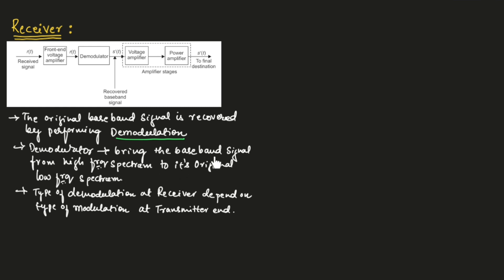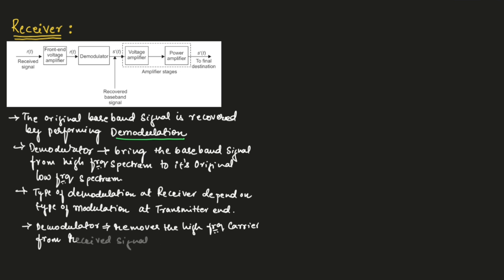At the transmitter end, the baseband signal is converted from the low frequency spectrum to the high frequency spectrum using modulation. The demodulator performs the opposite function — it brings the baseband signal from the high frequency spectrum back to its original low frequency spectrum. The type of demodulation performed will depend upon the type of modulation used at the transmitting end. The demodulator removes the high frequency carrier from the received signal and recovers the original baseband signal.